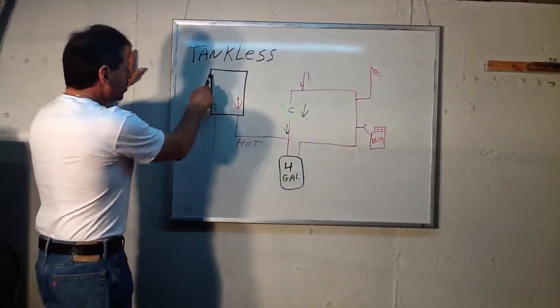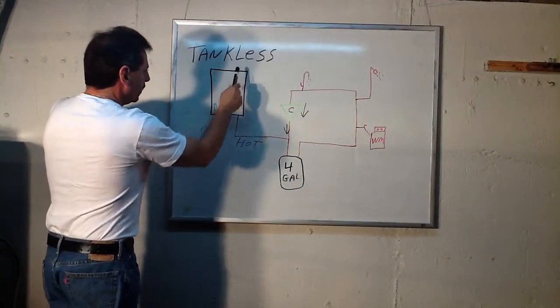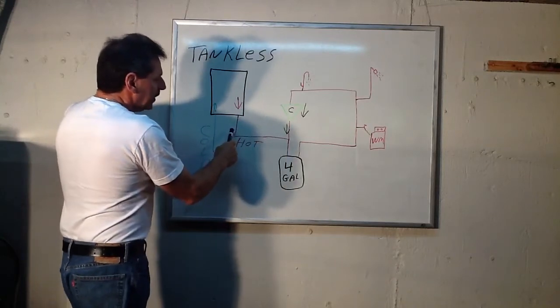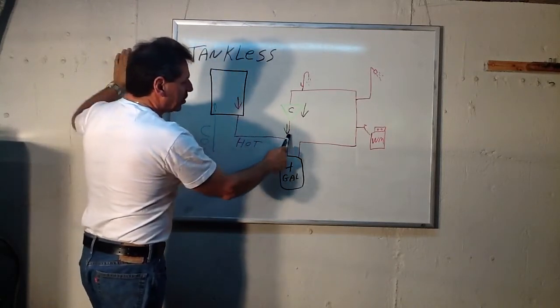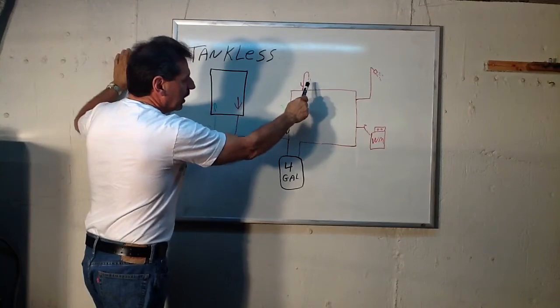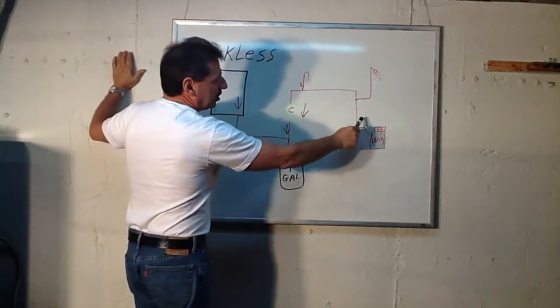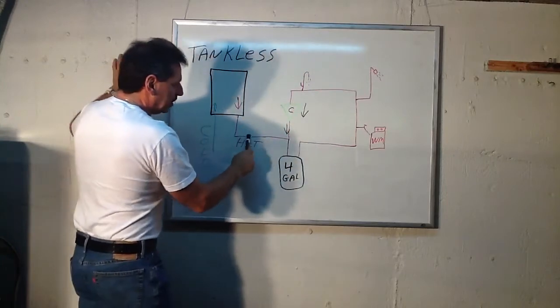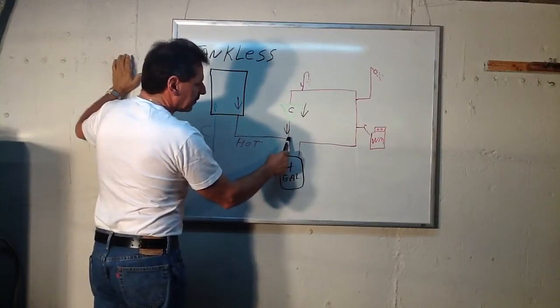There's a few ways of piping it out, but this is one pretty simple way. This is your tankless hot water heater, this is your cold in, this is your hot out. Instead of just going up into the house, this is the hot to the house - washing machine, shower, faucet.